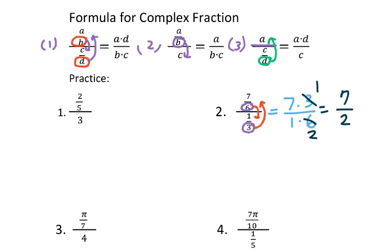Let's go to example number one. First, figure out the longest division line, then find the denominator — that's five. Drop it down and do the multiplication: three times five. The top will be two, so two over 15 is your answer.